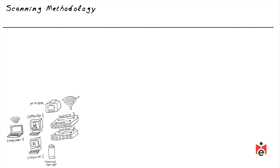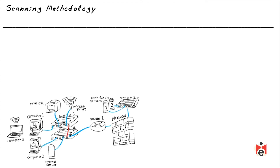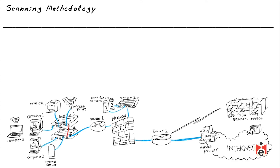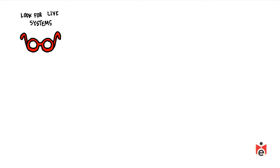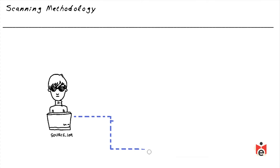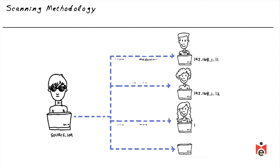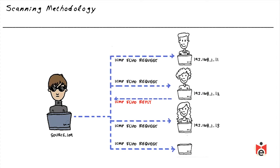Imagine we've been given permission and authorization to do ethical hacking, pen testing, and vulnerability assessment against this network. One of our first steps in our scanning methodology is looking for live systems — devices that truly exist as physical machines or virtual entities. A very simple mechanism for doing that is using the tool ping, sending a ping request to an IP address and checking for a response.